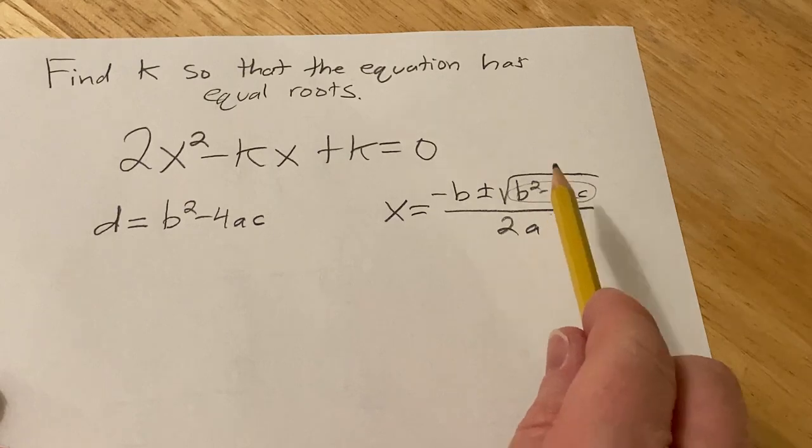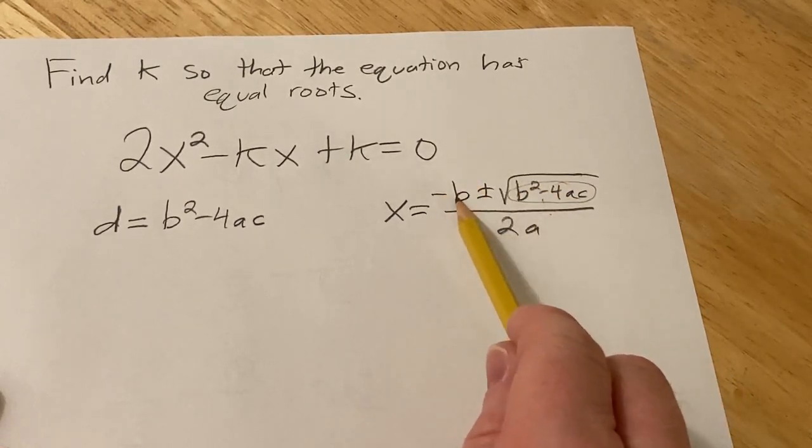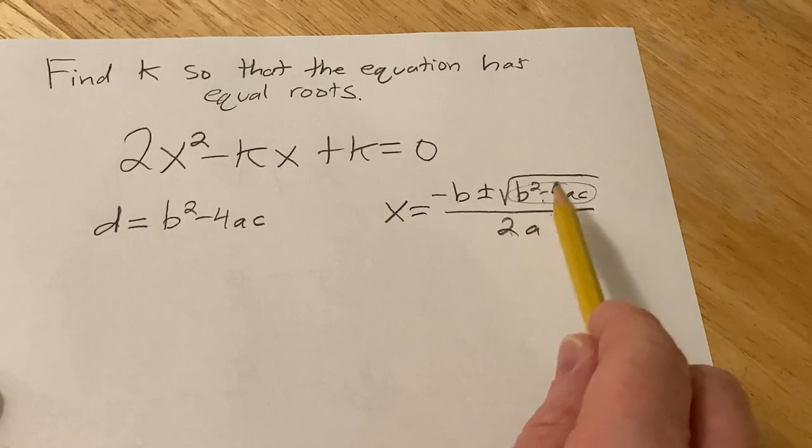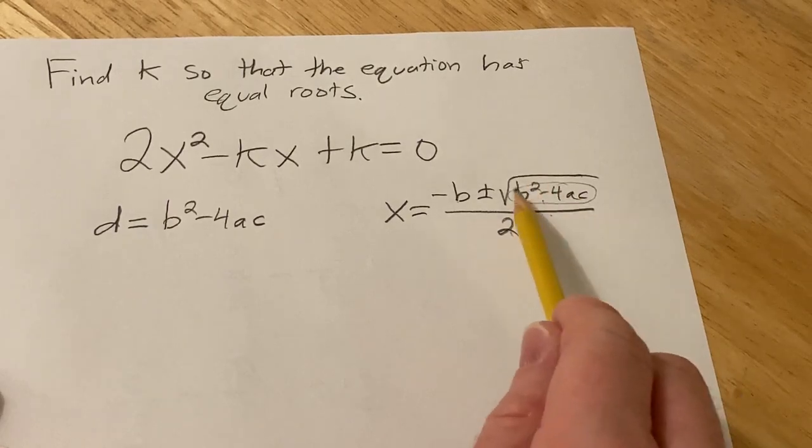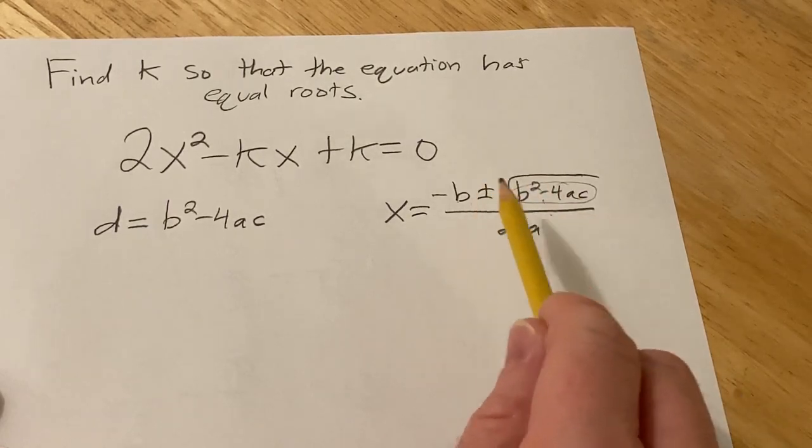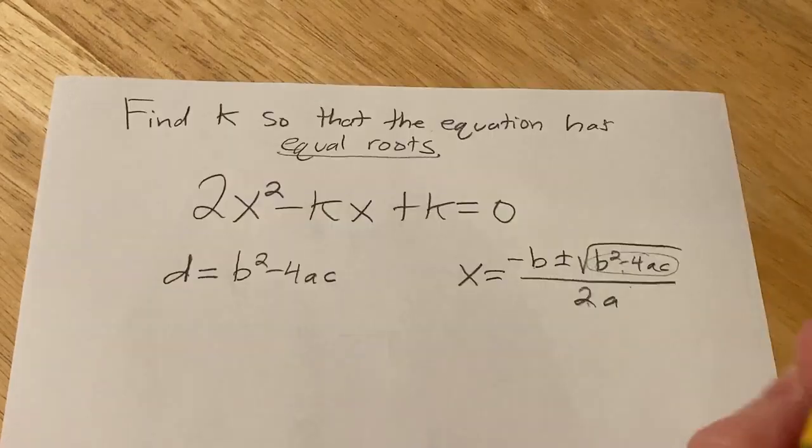And so if this part is 0, what's going to happen is you're just going to get -b/2a because all of this will be 0. The square root of 0 is 0. So you'll get a repeated real root or equal roots as the directions ask.